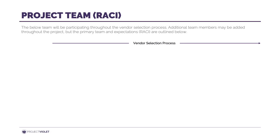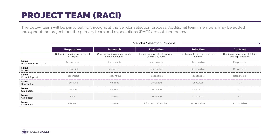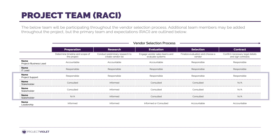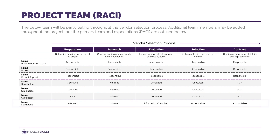One way to define the team and make sure everyone's on the same page is using a project RACI. For the most part, you should have a project lead — usually the people ops or business lead — someone that understands the operational processes really well. Depending on how big your company is, it'll make sense to have a partner IT lead. From there, identify project support and key stakeholders to consult and keep informed. You may also need to formally assign someone from leadership that will be ultimately accountable, own the decision, and sign the contract.